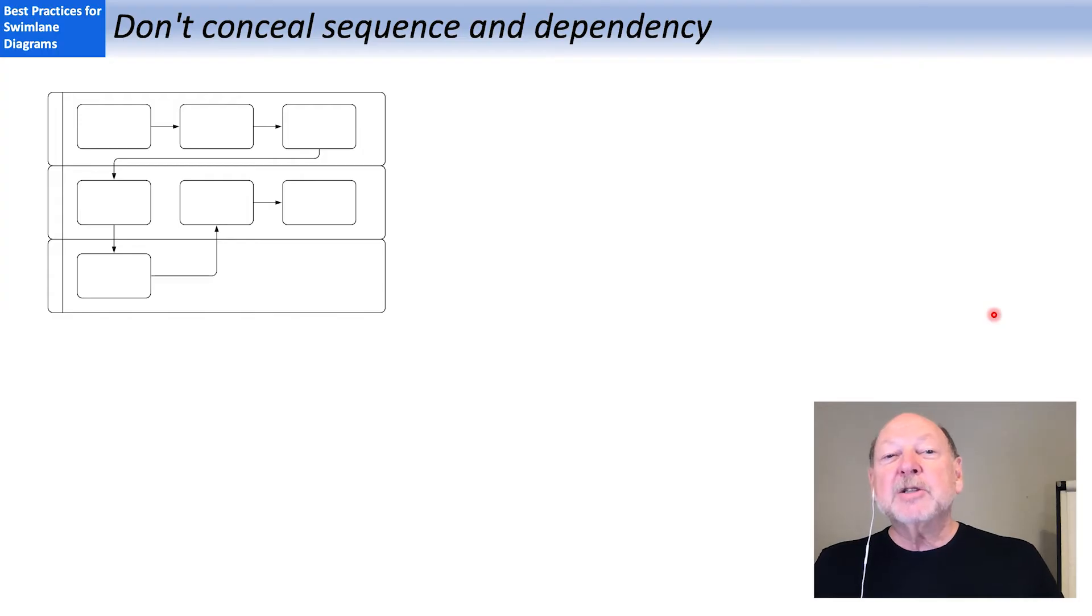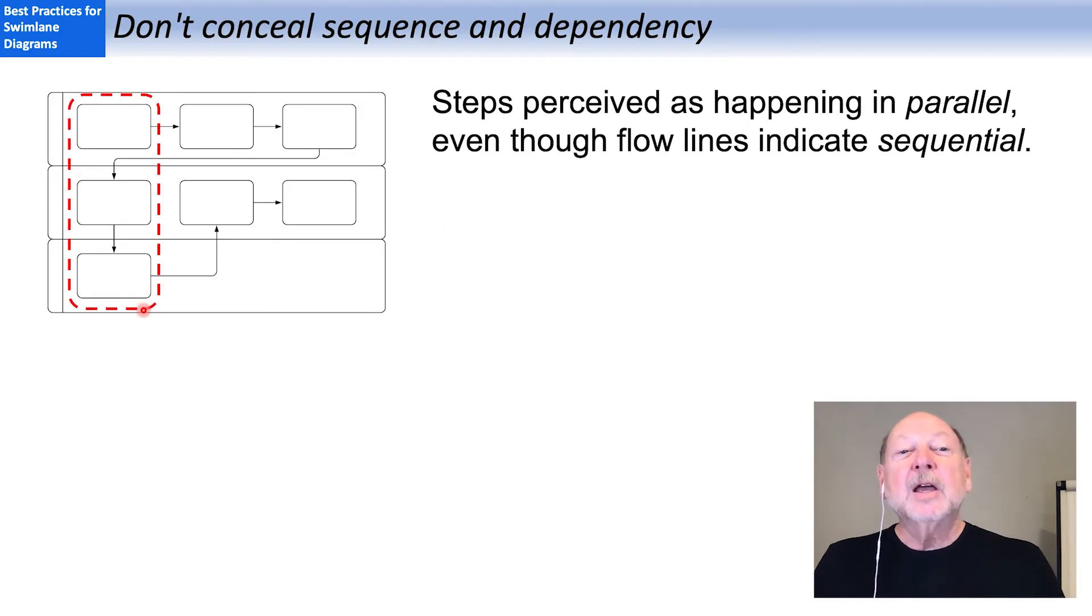So sequence and dependency flow are very important, and we convey that with how we draw the diagram. And this one here is a good example of what not to do. We've tried to compress the diagram into less real estate, but now it looks to the human mind like these steps on the left are happening in parallel.